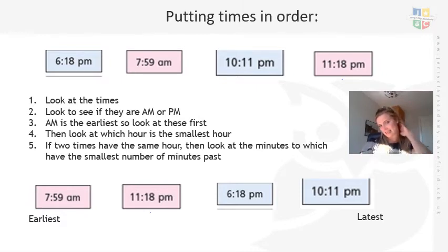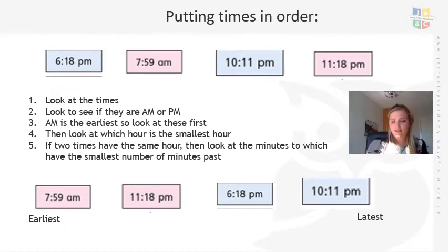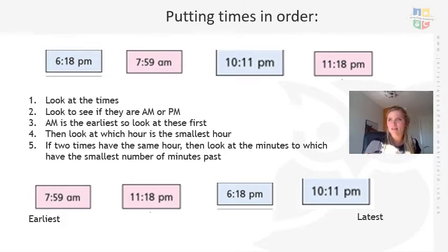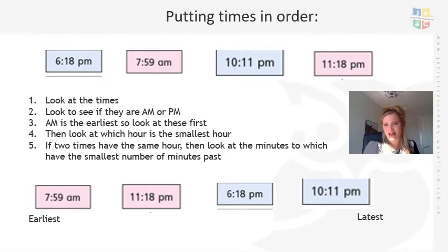For example, 6:18 tells you it's 18 minutes past six. When we look at the times, the first thing we need to do to order them is check whether they are AM or PM. Because if we're looking for the earliest, we're going to look at AM — AM comes first. A way to remember it: A is the start of the alphabet and P is further down, so A is earliest. So we can ignore the PM times and focus on the AM ones for now.